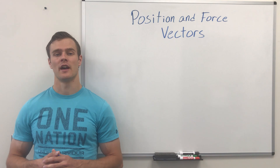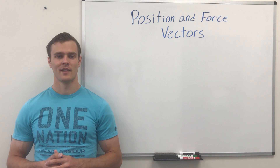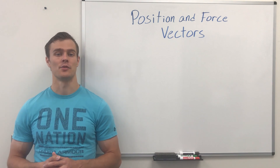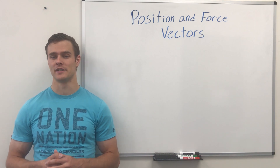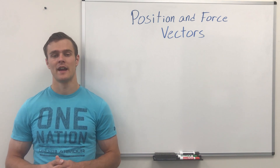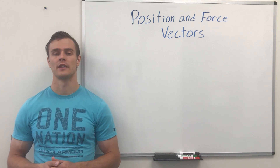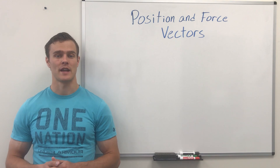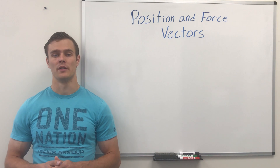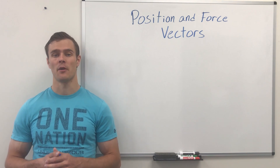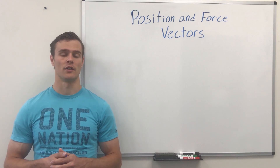Position and force vectors help us apply what we've learned about vectors to solve engineering problems. A position vector is a vector that relates one point to another point in space, where the magnitude of the vector is the distance between the two points and the direction is how to get from one point to the other. A force vector is a vector that represents a force acting along objects, usually like a rope or a cable, where the magnitude is how big the force is and the direction is the direction along the rope or the cable.